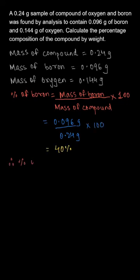For the percentage of oxygen present in the compound: since the compound has only boron and oxygen and we calculated the percentage of boron to be 40 percent, the percentage of oxygen present would be 100 minus 40 percent, which is 60 percent.